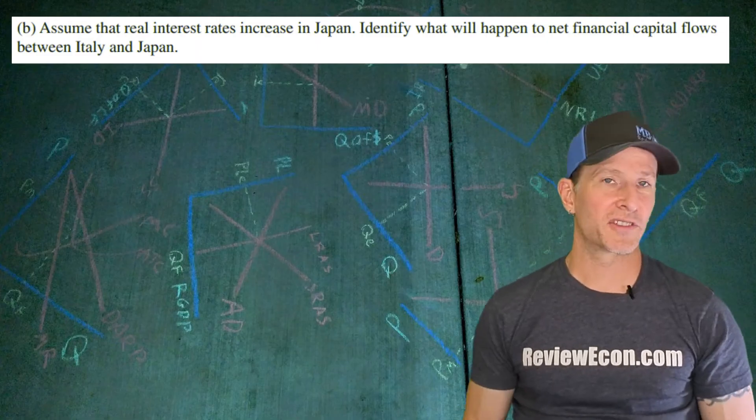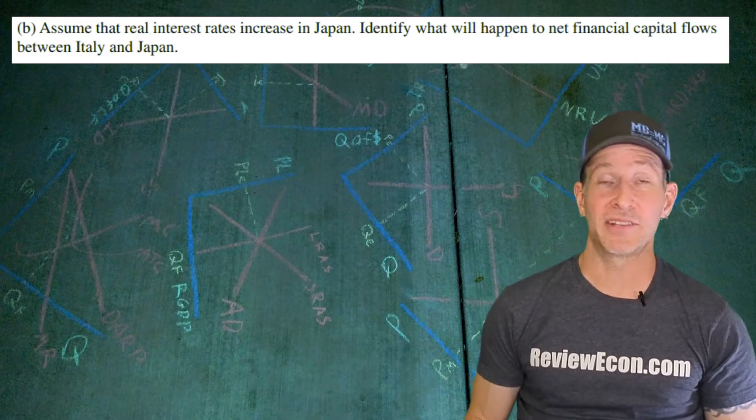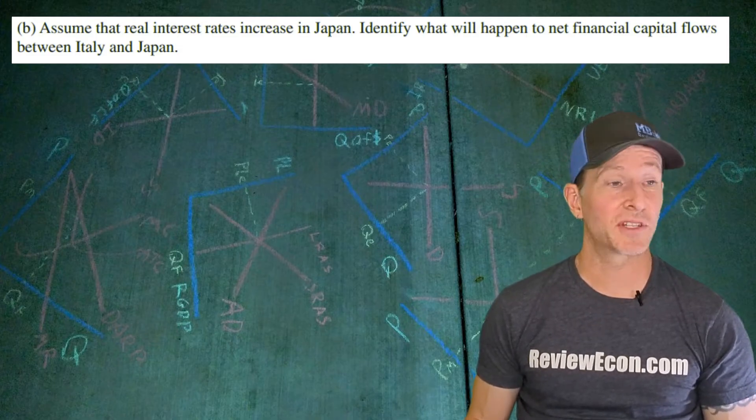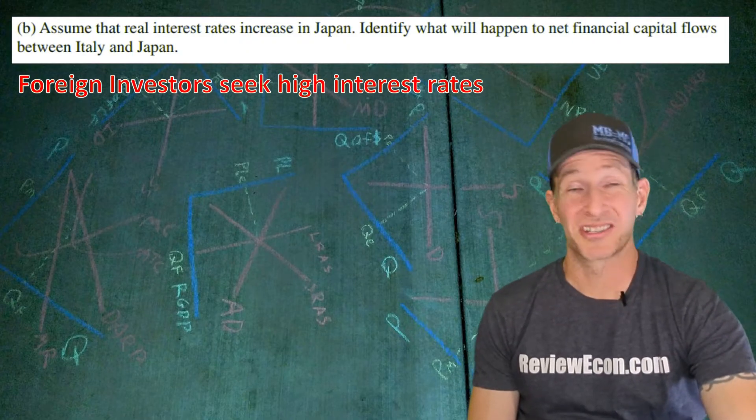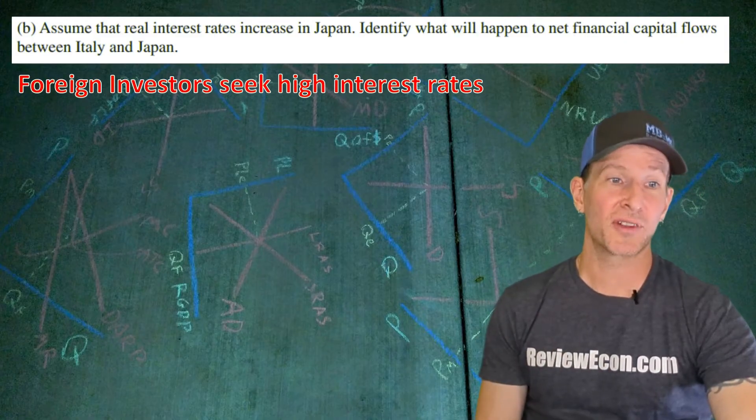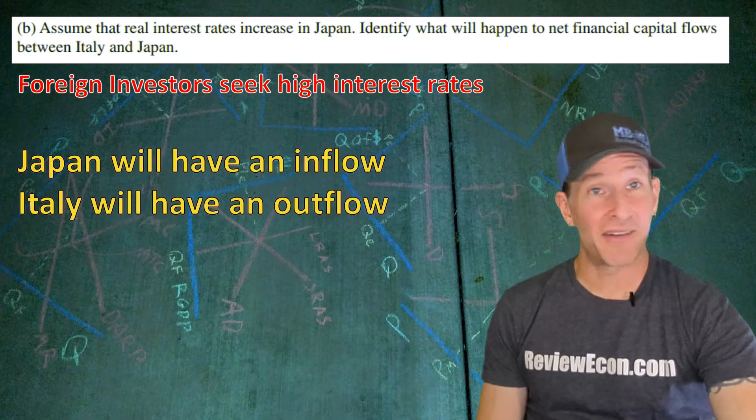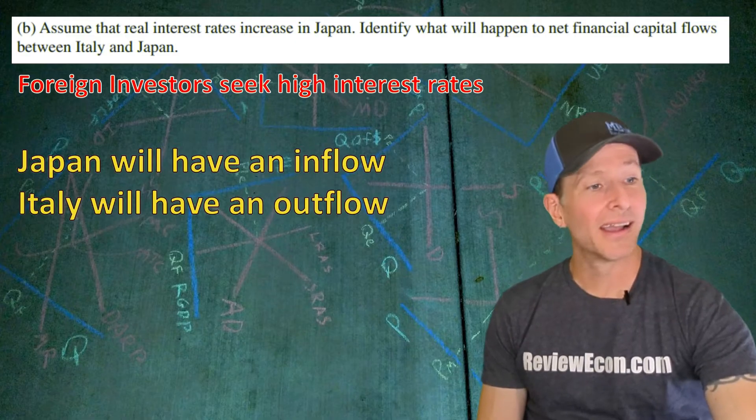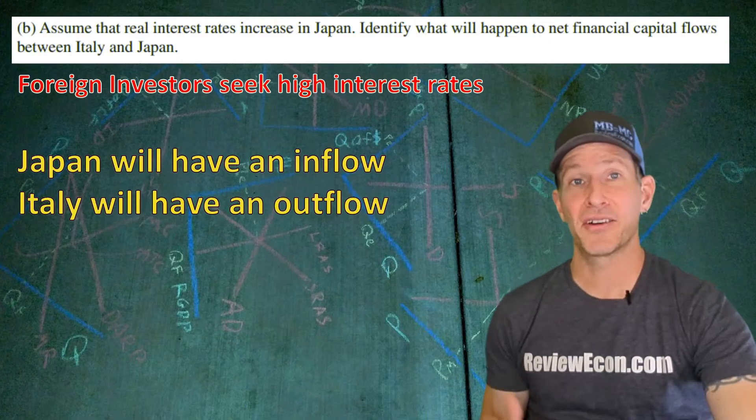For part B, we're going to assume that the real interest rate in Japan increases. And then we have to identify what will happen to net financial capital flows between Italy and Japan. In order to answer this question, it's helpful to remember that foreign investors seek high interest rates. Financial capital flows to high interest rates and away from low interest rates. So that means Japan will have a financial capital inflow and Italy will have a financial capital outflow. Just identify those and you get your point.